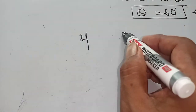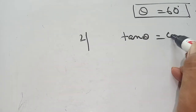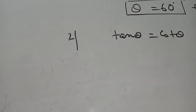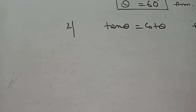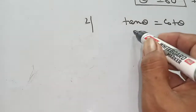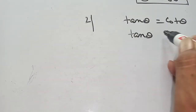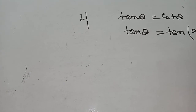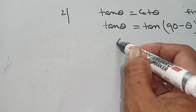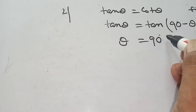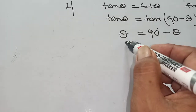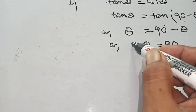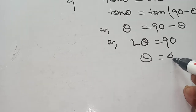Problem 2: Tan Theta equal to Cot Theta. Find Theta. This you can write in two ways. Method 1: Instead of Cot Theta, you can write Tan(90 degree minus Theta). Then Tan and Tan will be cancelled. Theta equal to 90 degree minus Theta. Then 2 Theta equal to 90 degree. That means Theta equal to 45 degree.